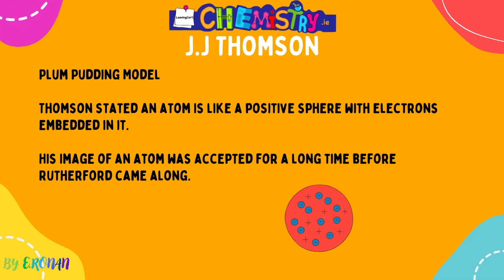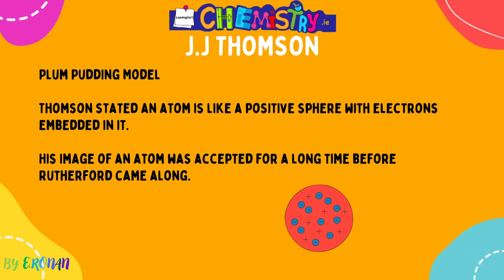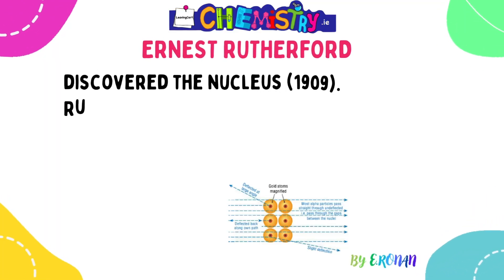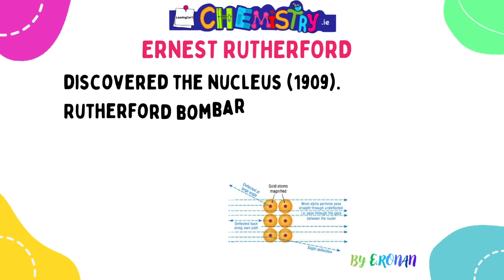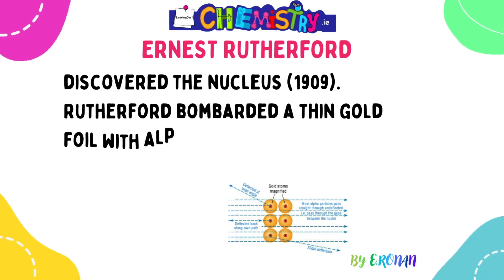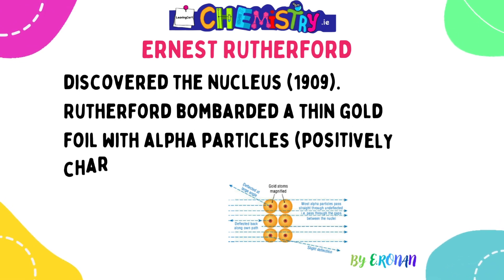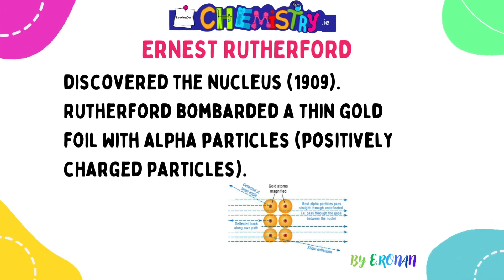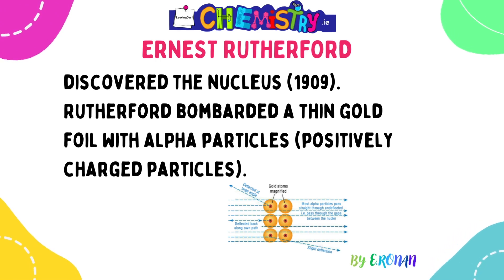Ernest Rutherford introduced alpha particles and discovered the nucleus in 1909. He bombarded a thin sheet of gold foil with positively charged particles known as alpha particles. From this experiment, you are expected to know both the results Rutherford obtained and the conclusions he drew from his observations.